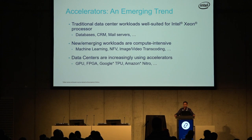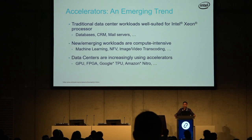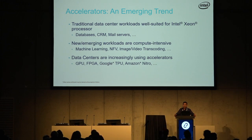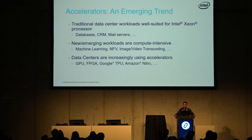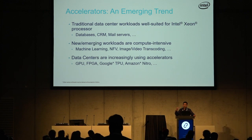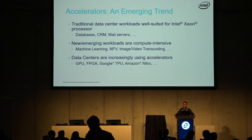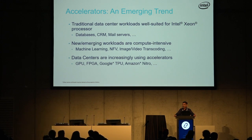So there is an increasing trend towards using accelerators in data centers. You might have heard about Microsoft using FPGAs. Of course, GPUs are very common — when you say accelerators, people think of GPUs. You might have heard of TPU from Google, the TensorFlow processing unit. Amazon has something called Nitro, which offloads host-level processing like network packet processing to accelerators.